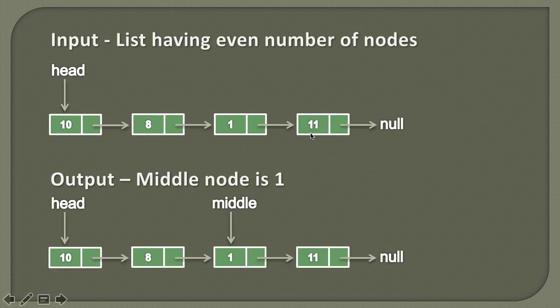In order to find the middle node in a singly linked list, we need to consider two cases: one when the linked list has an even number of nodes, and the other when the linked list has an odd number of nodes.